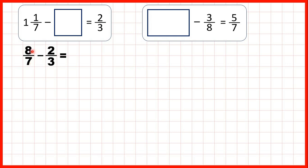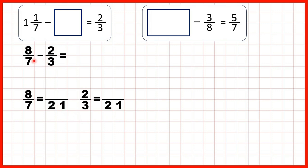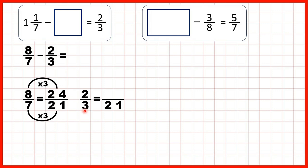So we can change 8/7 and 2/3 into equivalent fractions which have a denominator of 21, because when our denominators are the same, we'll be able to subtract the fractions. Now 7 times 3 is 21, and what we do to the denominator we do to the numerator as well. 8 times 3 is 24. Now 3 times 7 is 21, and 2 times 7 is 14.